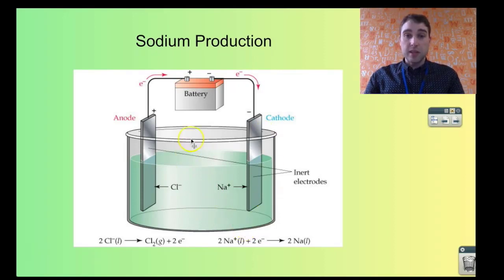So at the cathode again we're getting reduction. The sodium ions from the melt are being reduced to liquid sodium. The liquid sodium would go up in this case because it's less dense than the salt. You could collect it at the top over here.